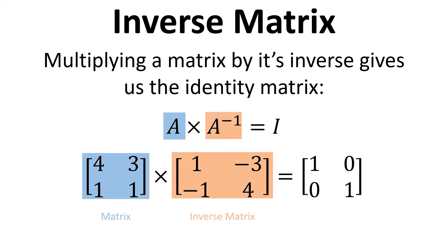So the first part is the matrix, then we've got the inverse, and then we've got the identity matrix.